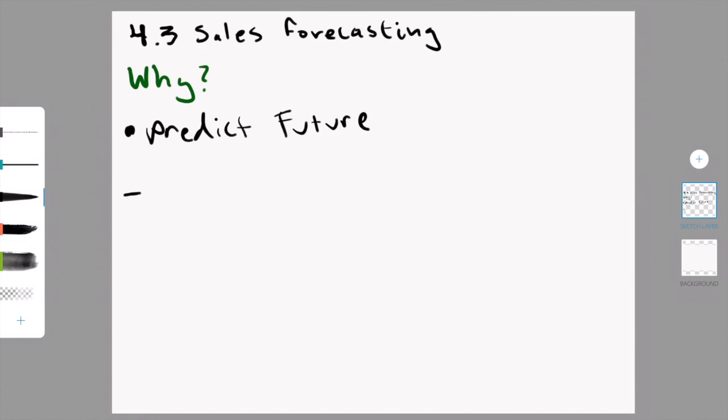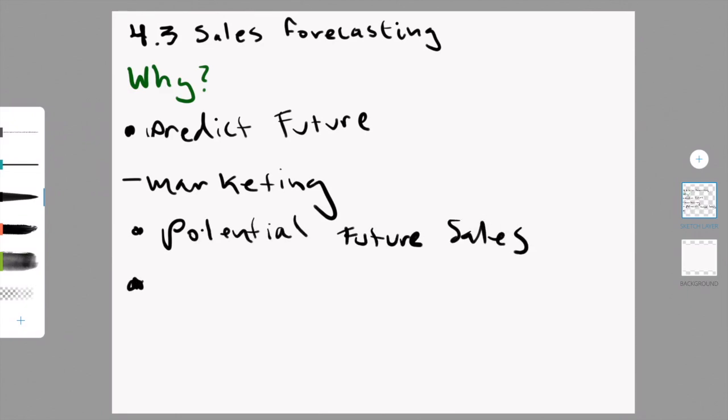For finance, you can also check the cash flow. For operations, you have to predict the future to see how efficient your company is being and so that you can increase efficiency. For marketing, it can be used to see the potential future sales and thus the potential future market for market planning.